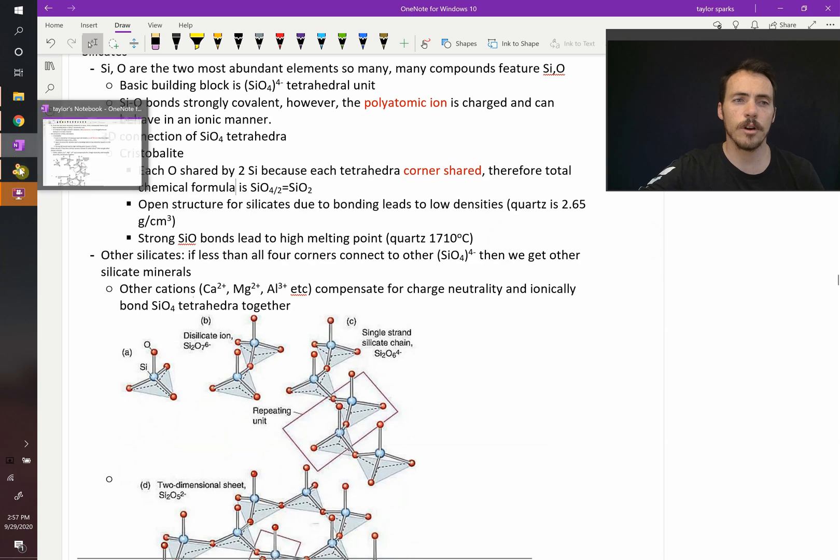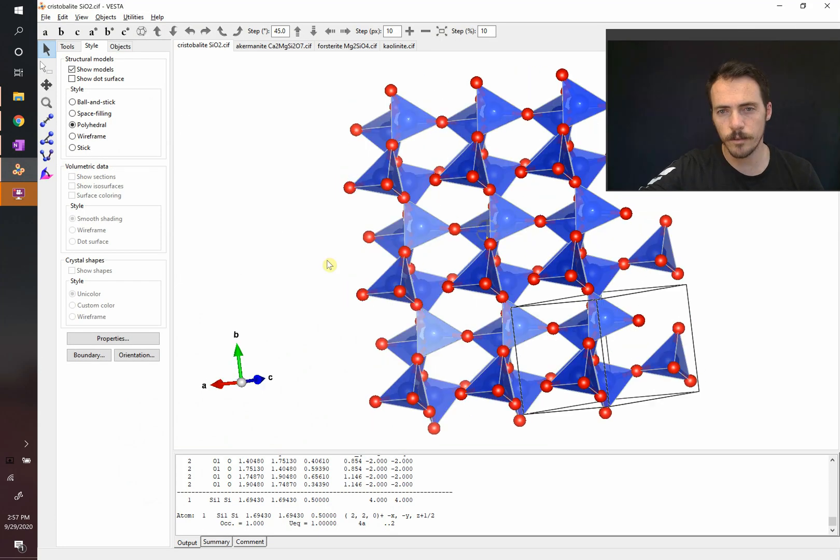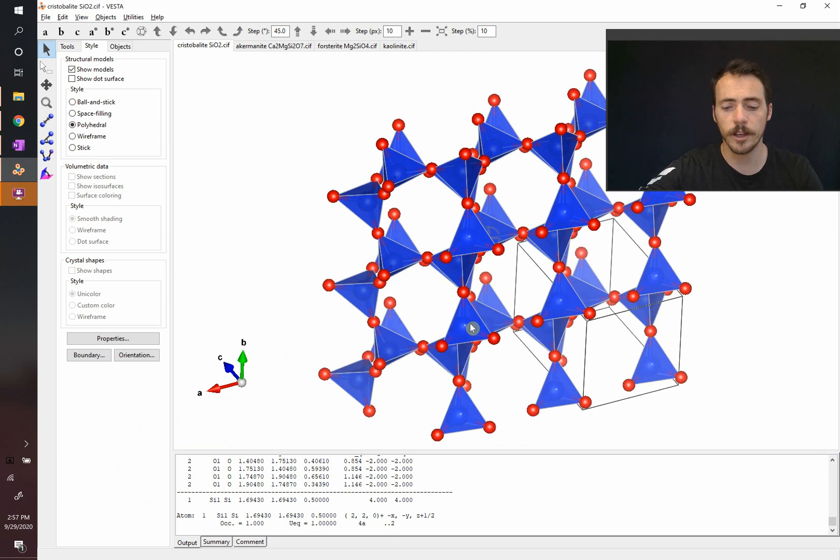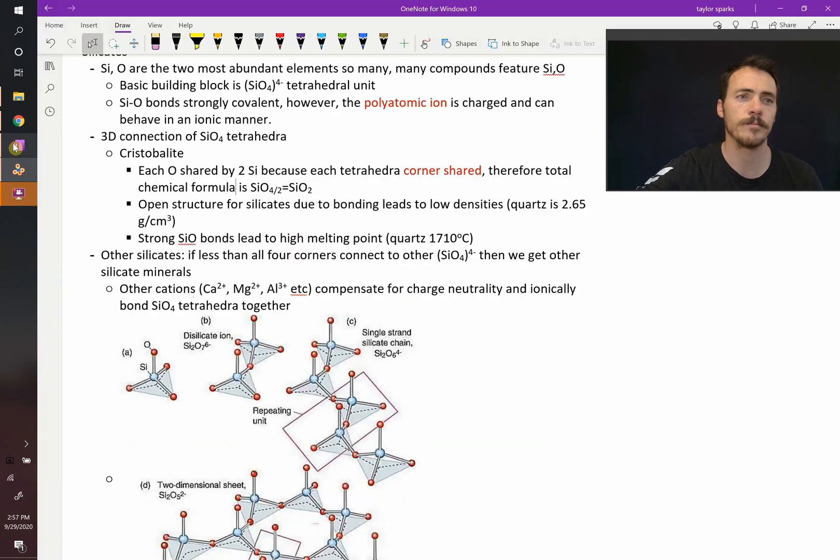Because of the structure's open nature, you can look at it, there's lots of open space in here, that leads to a relatively low density for these materials. By the way, this is like quartz. Pure quartz has this structure similar to this. This is actually a high temperature version of it. The strong bonding leads to high melting points, the open structure leads to low density.